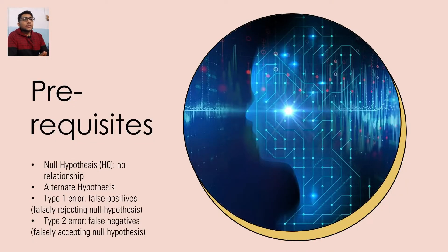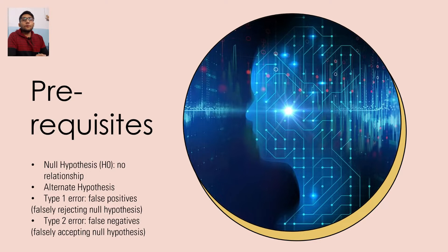There are primarily four prerequisites to understand with respect to statistical tests. First is the null hypothesis, which denotes that there is no statistical difference between the groups. The alternate hypothesis suggests that there exists a certain relationship or statistically important difference between the various groups. Type 1 error denotes false positives — falsely rejecting the null hypothesis. Keep a note of these terminologies; you are going to hear about them quite often when learning about various statistical tests.